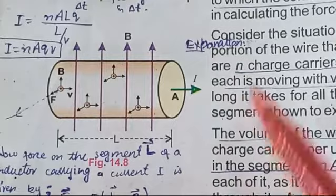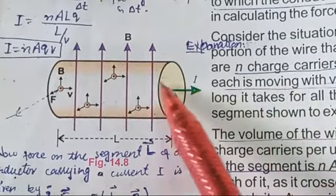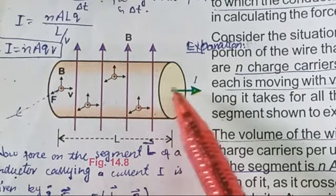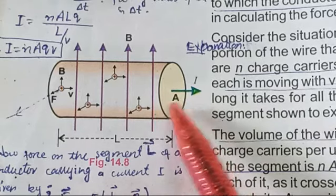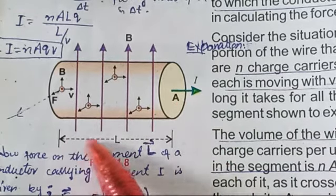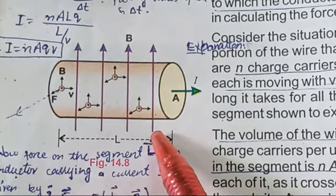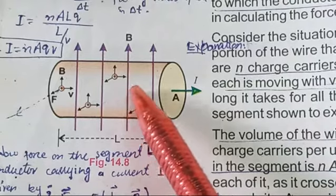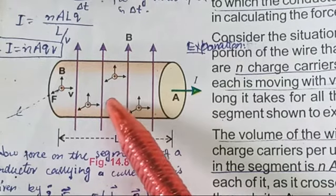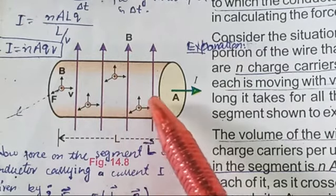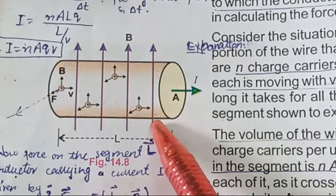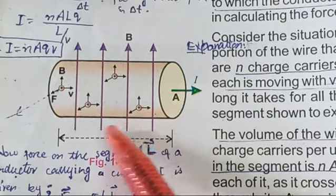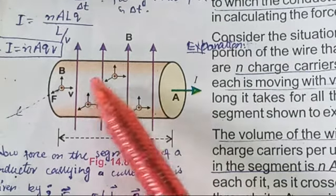This is a wire segment and its volume is represented by A times L, where A is the area and L is the length of this wire segment. The total number of charge carriers is represented by N, multiplied by A and L, so total charge is N·A·L.